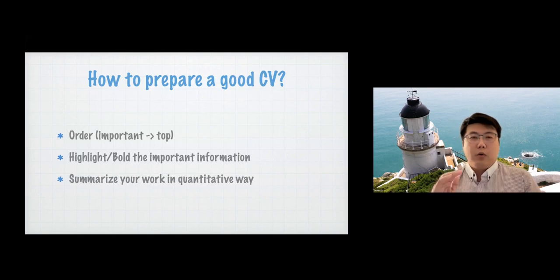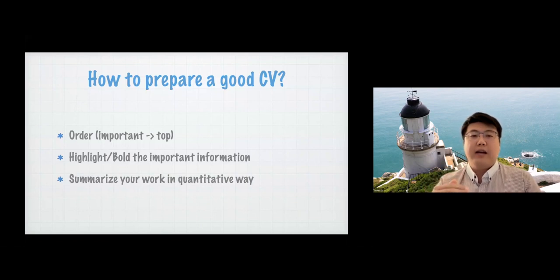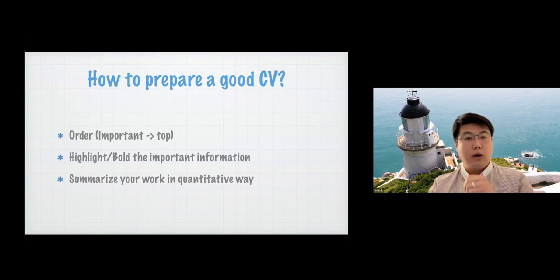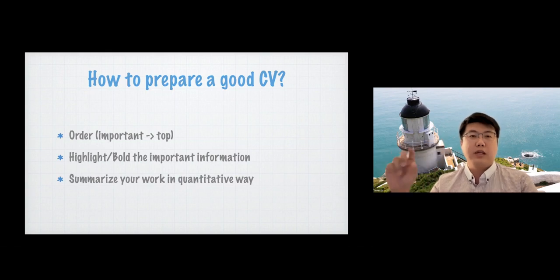要怎么去准备一个比较好的CV呢？最简单就是要先假设所有的faculty他们都很忙，不要想说我背景经历都很好所以等他们自己去找。我们要假设他们只能看你的CV 30秒，所以我会建议最重要的东西放在最前面，如果能highlight就用粗体。他们想看到的就是你的学校、ranking或GPA，或是你有没有在其他有名的教授的实验室里面做过，有的话可以把那个教授的名字highlight起来。